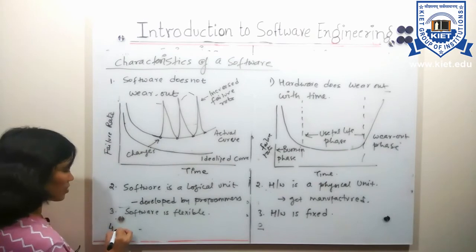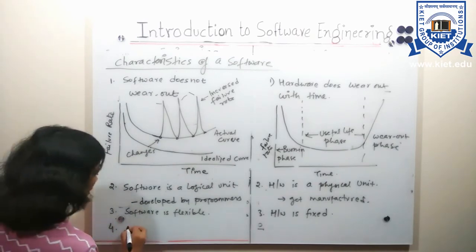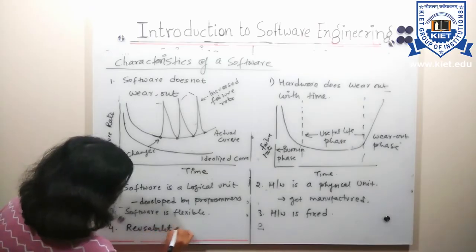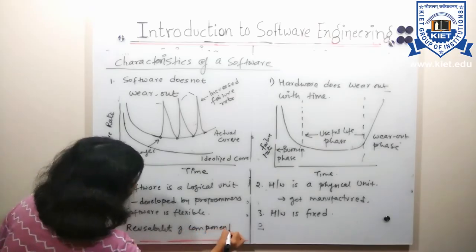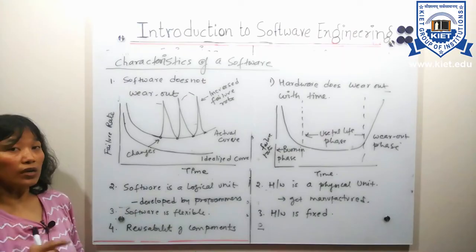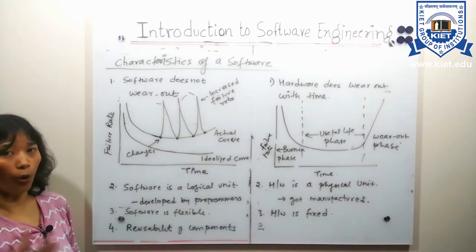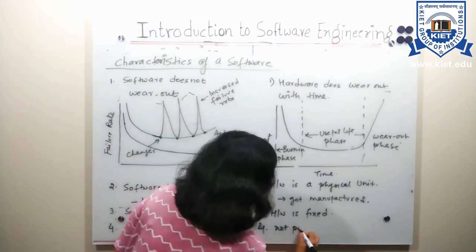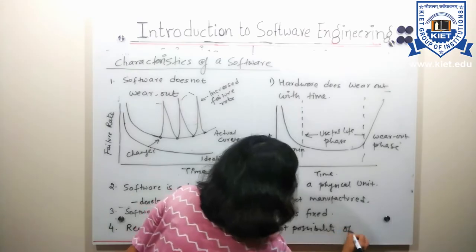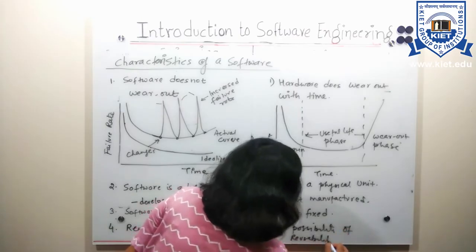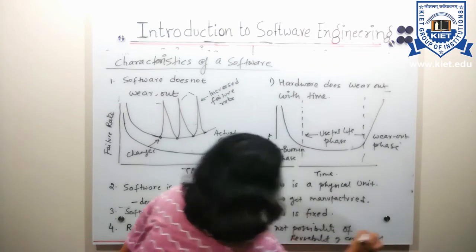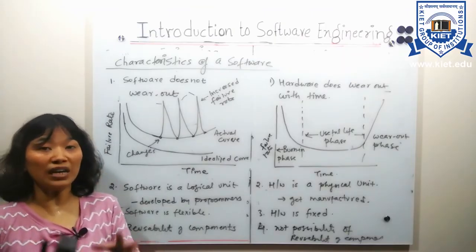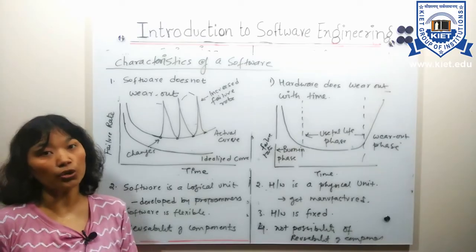The last characteristic of software is that it allows the possibility of reusability of components. In hardware, reusability of components is not always possible because hardware may be in the wear-out phase and not in a condition to be used further.